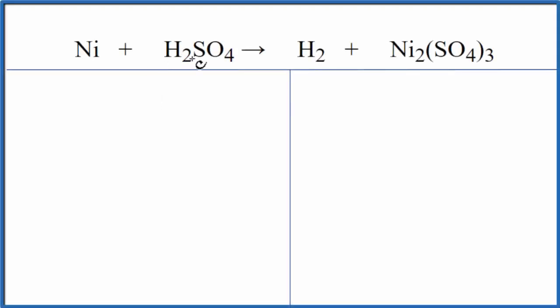In this video, we'll balance nickel plus sulfuric acid. It yields hydrogen gas plus nickel sulfate. This is a single replacement reaction where the nickel replaces the hydrogen. The hydrogen is left by itself.